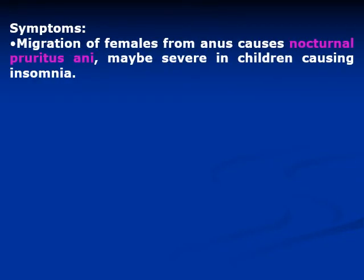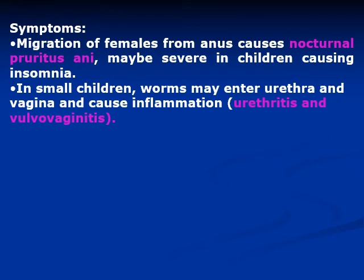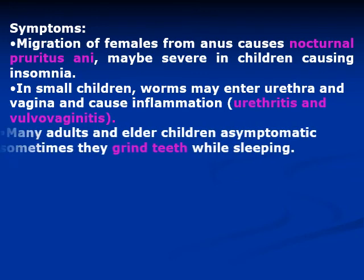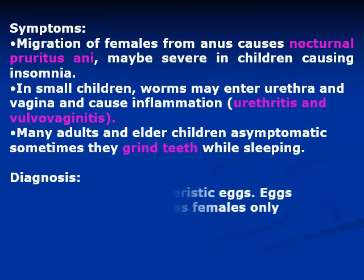The main characteristic symptom is nocturnal pruritus ani, due to migration of females around the anus. This may be severe in children, causing insomnia. In small children, worms may enter the urethra and vagina, causing urethritis and vulvo-vaginitis in young females. In older children, symptoms may be absent, but they may grind their teeth while sleeping due to the irritation caused by the adults.